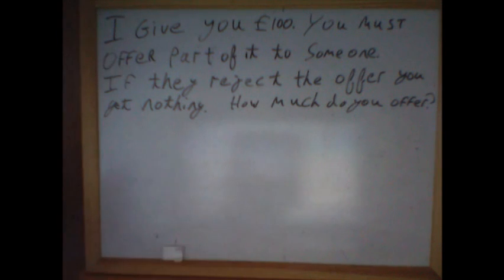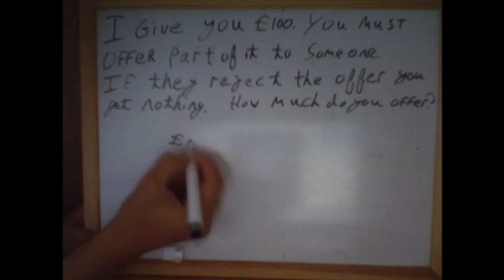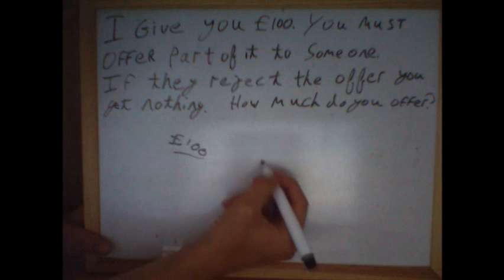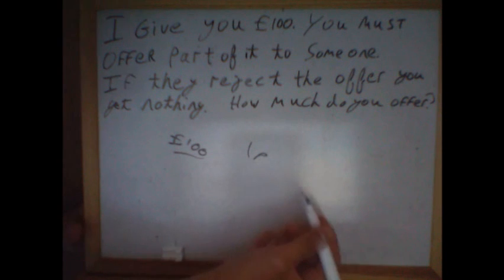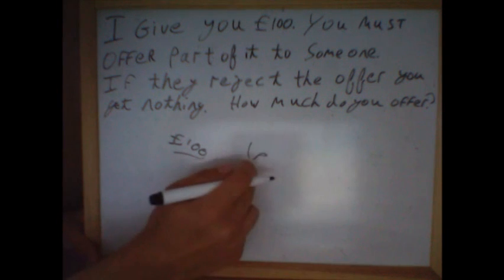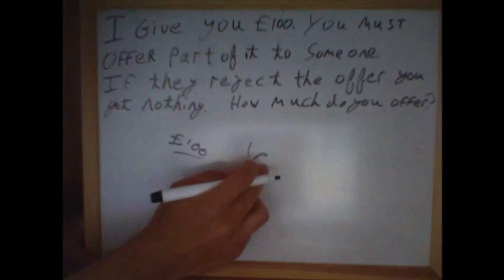So how much money is there altogether? We have £100, and we're going to assume that the smallest division of money is a single pence. You could assume one pound — maybe they'll tell you in the interview what to assume — but we'll assume one pence.